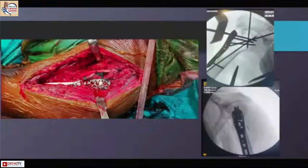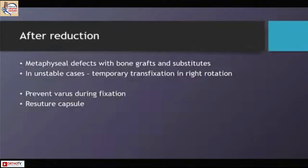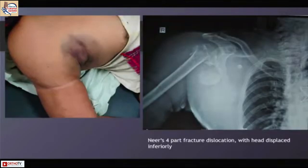For a four-part fracture dislocation, I always perform a biceps tenotomy first and then bring the tuberosities over the reduced head. After reduction, especially when there is an anatomical neck fracture, there tends to be a large metaphyseal void. It is always useful to fill that void with bone graft — allograft or autograft.